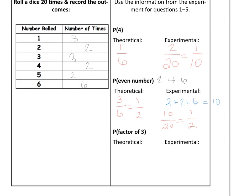For the third one, factors of three: we need to know that the factors of three on a number cube are one and three. That's two out of six numbers, which is one-third. The experimental probability was we got one five times and three three times, so we got them eight times out of twenty, which simplifies to two-fifths. Again, we're close but not the same.